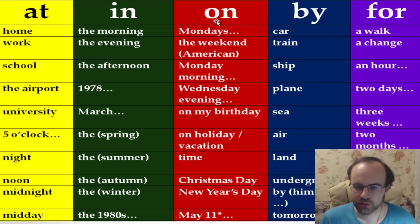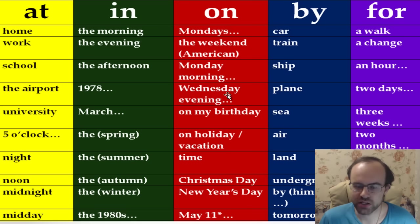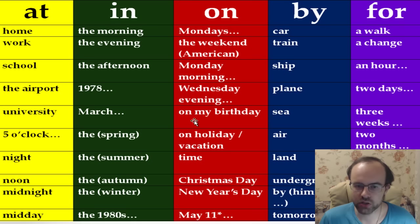We also use 'on' with a day of the week combined with morning or evening — for example, on Monday morning, on Tuesday morning, on Wednesday morning. The same is true for evening: on Wednesday evening, on Thursday evening, on Friday evening, on Saturday evening. So the pattern is: day of the week + morning or evening.